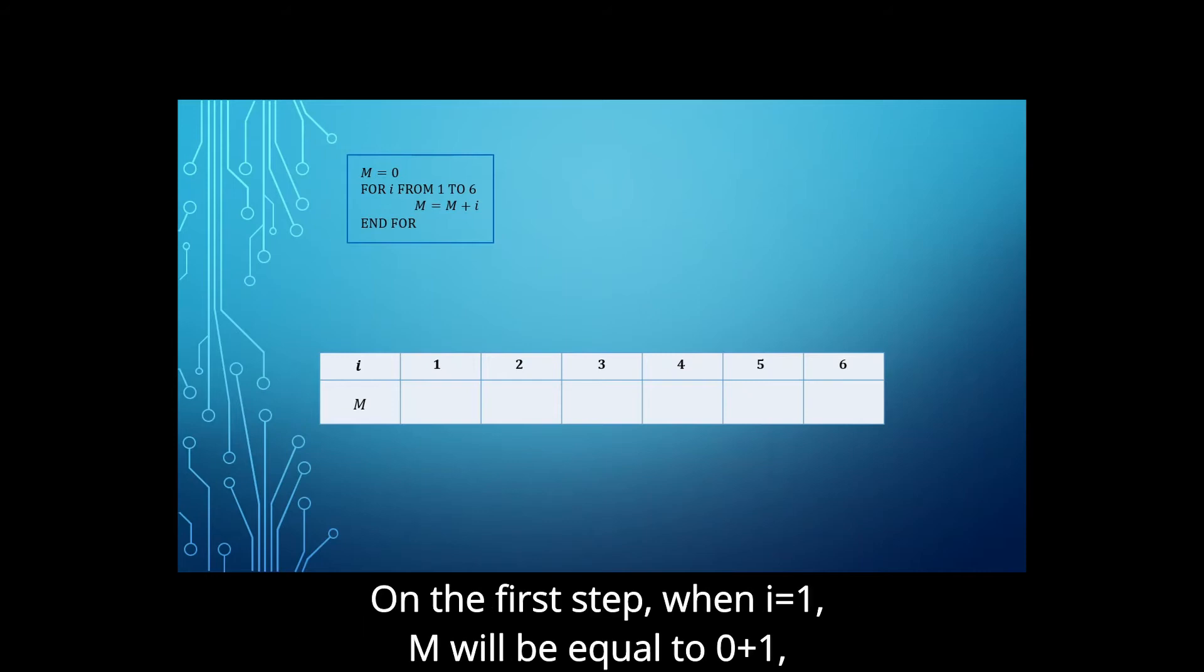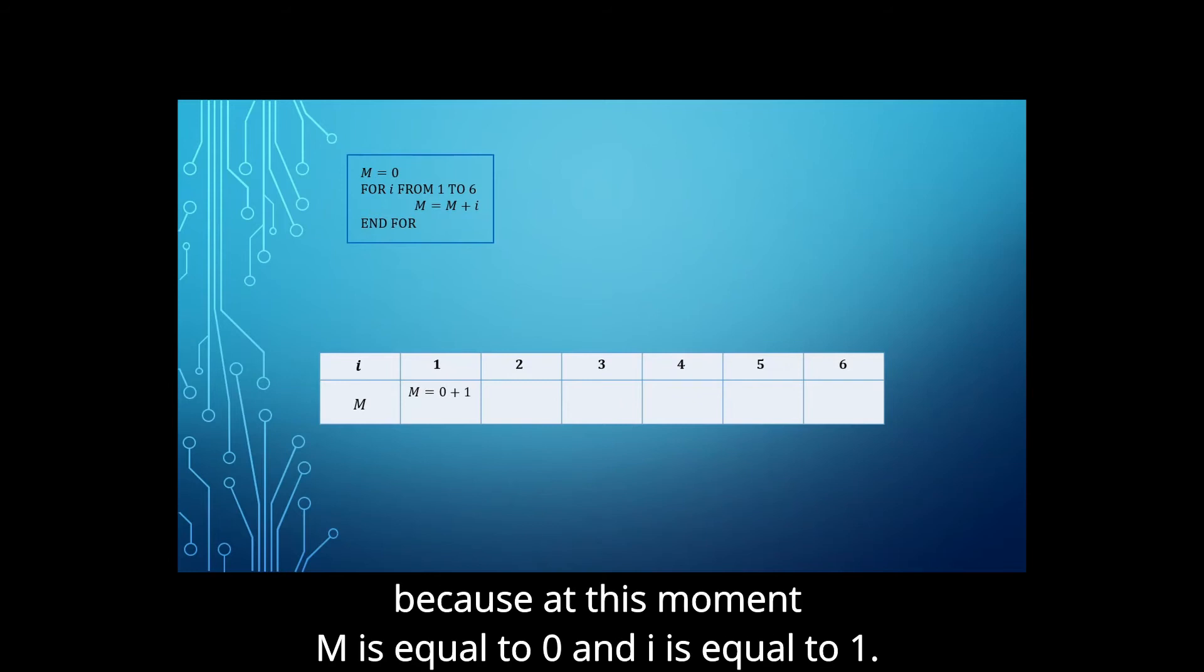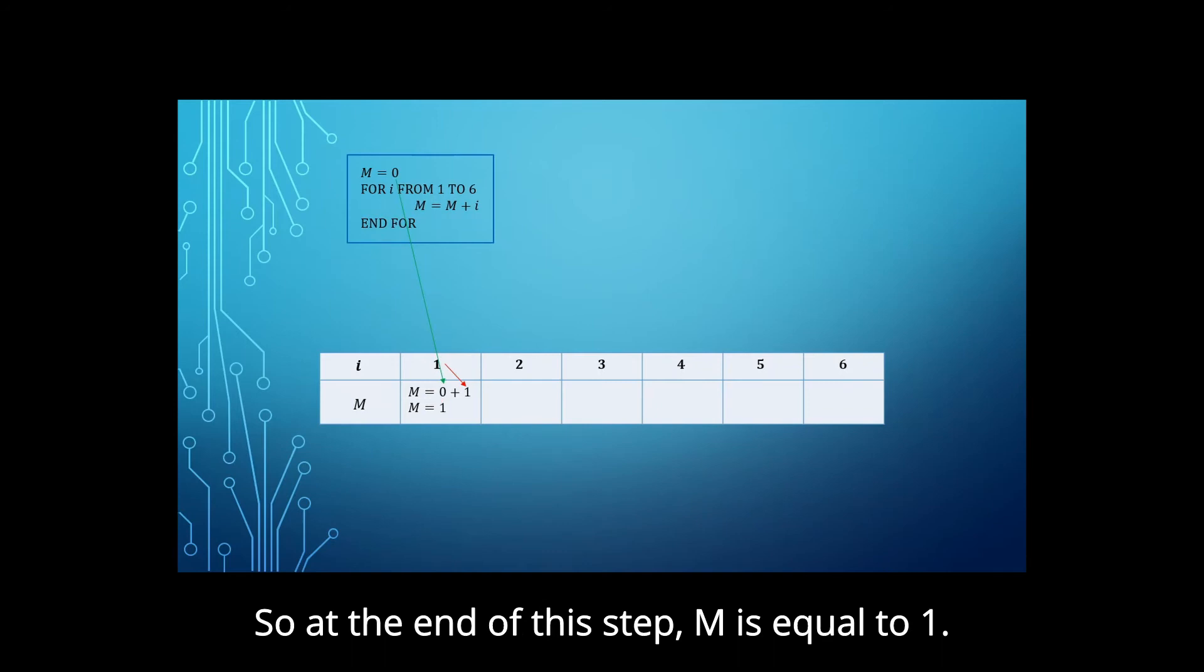On the first step, when i equal 1, m will be equal to 0 plus 1 because at this moment, m is equal to 0 and i is equal to 1. So at the end of this step, m is equal to 1.